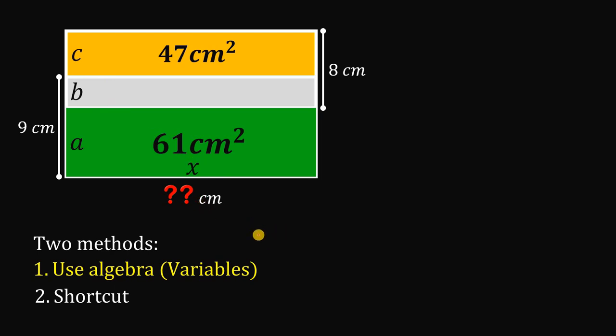Now, from this, we can now create some equations. Let's first use the given area of 47 square centimeters. To get 47 square centimeters, we can multiply x and c. So, we can say that c times x must be equal to 47.